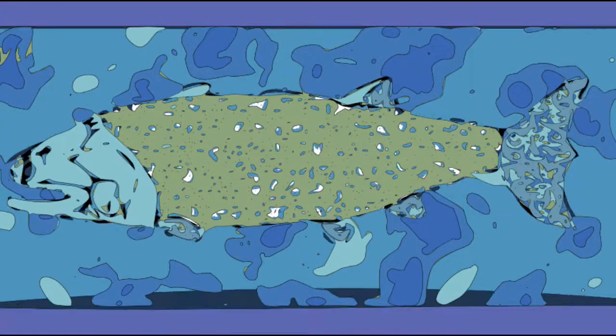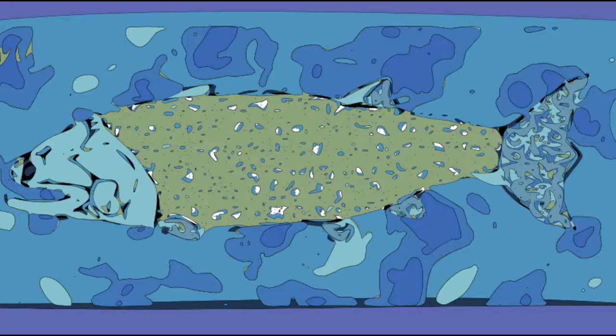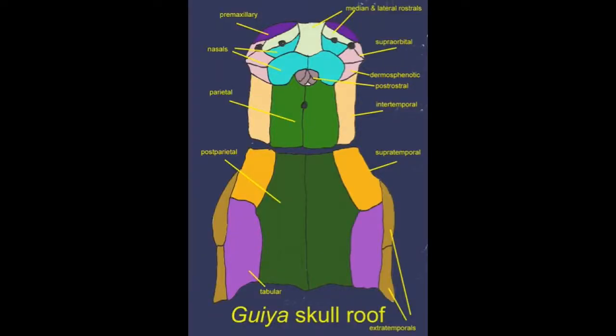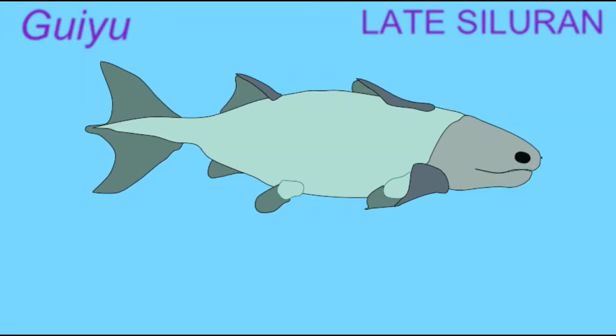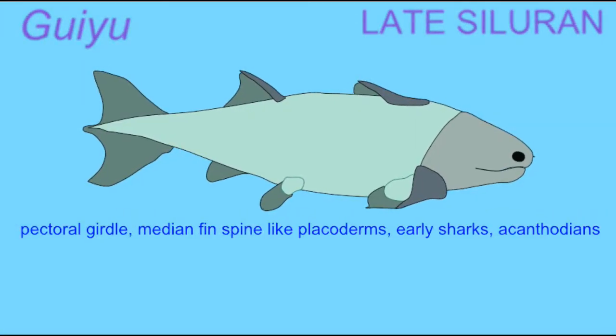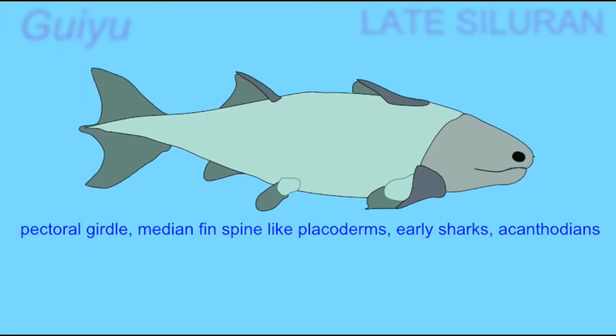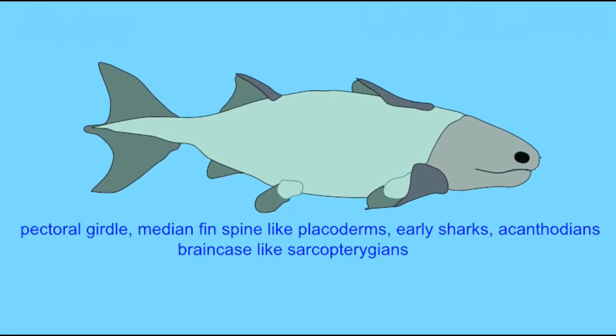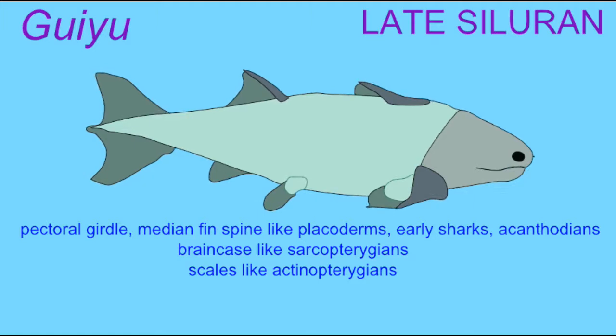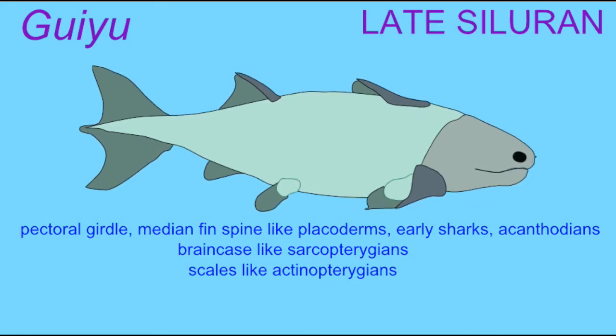For the first time, it is possible to say that in this fossil fish there is a homologue of the skull bones which the modern osteichthians possess.